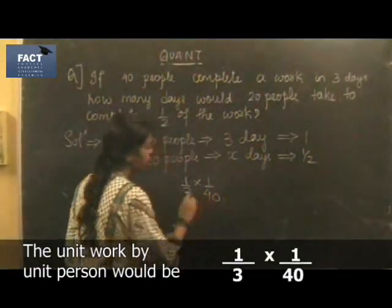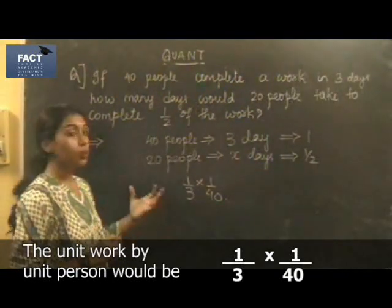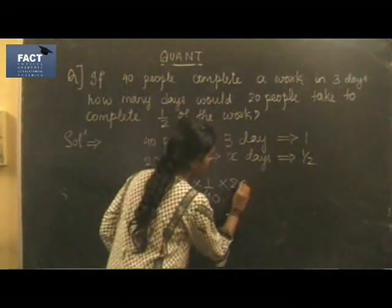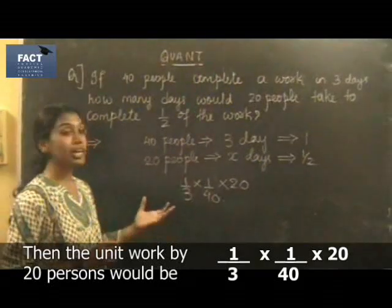If you divide it by 40, you get the amount of work that is done by one person in one day. If you multiply it by 20, now you know the work done in one day by 20 people.